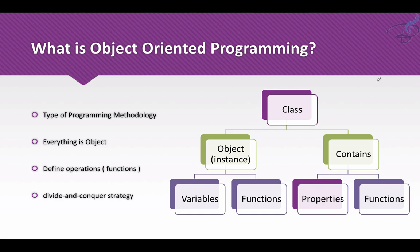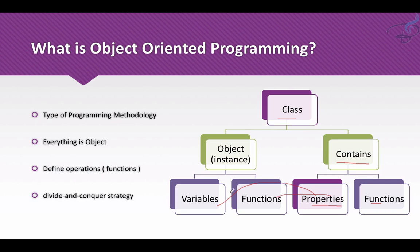A class is just a collection of attributes and functions. When you take an instance — or simply a copy — of the class, it is called an object. An object can have variables or attributes and functions or methods. Similarly, a class contains properties and functions, and these properties are used by functions and variables.